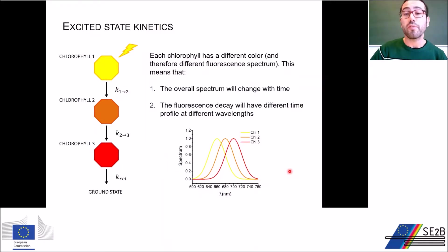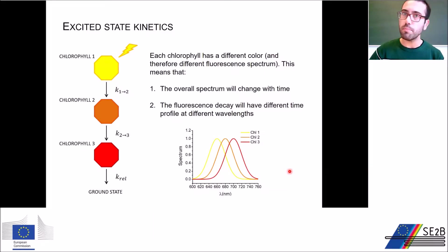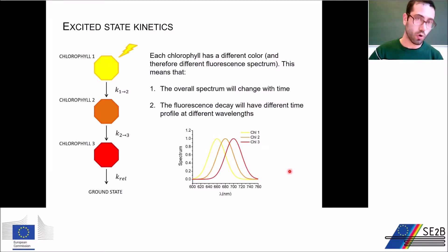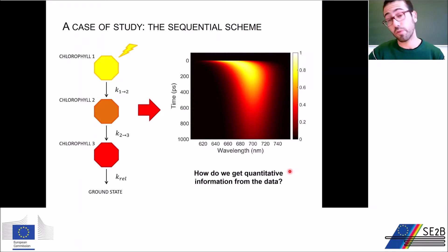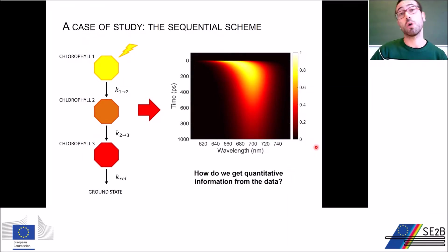If each chlorophyll has a different emission spectrum and a different color, this explains why when we change the time of emission, the emitted spectrum also changes. Equally, if we change the emission wavelength, we will see a different time profile for the emission. This is basically how a time-resolved fluorescence dataset would appear for this kind of system. Now we wish to do the opposite: from a dataset, we want to extract information and obtain a model that describes our system.